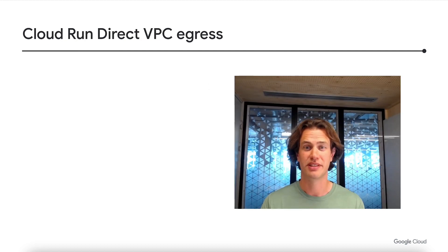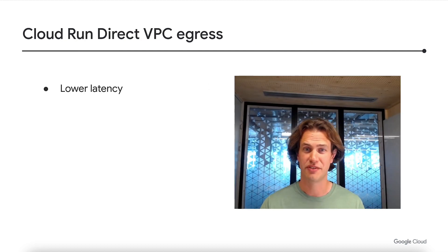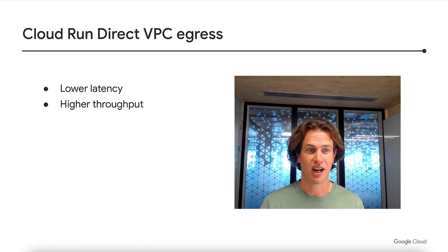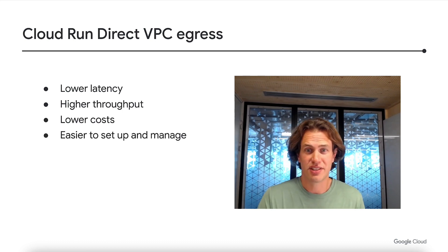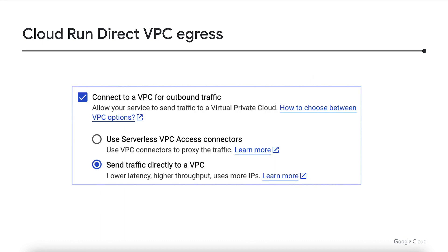So let's wrap up. With direct VPC egress, you get fewer hops in the network path, enabling lower latency, higher throughput, lower costs, and it's easier to set up and manage. If you want to try it out today, check 'send traffic directly to a VPC' when configuring network access for your Cloud Run service. Thanks for listening.